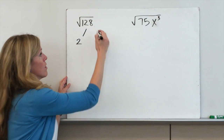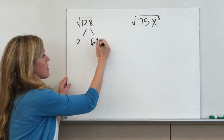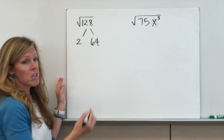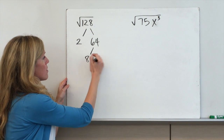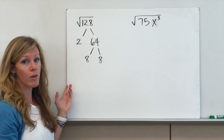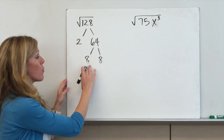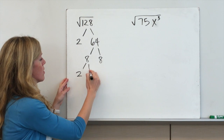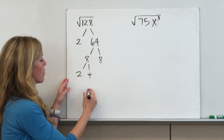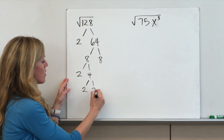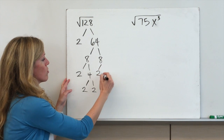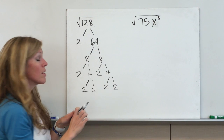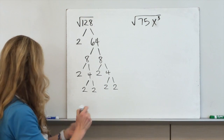So we have 2 times 64. You may think 64 is 8 times 8. Remember, there's no one perfect way to make a factor tree, but we know that 8 has factors so we want to keep going. So 2 times 4, 2 times 2, we have another 2 times 4 and 2 times 2.